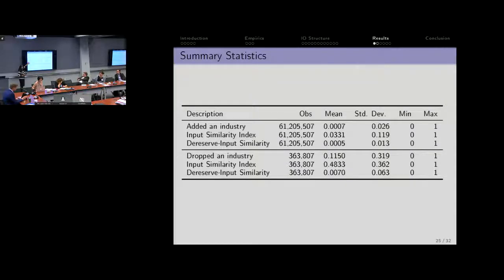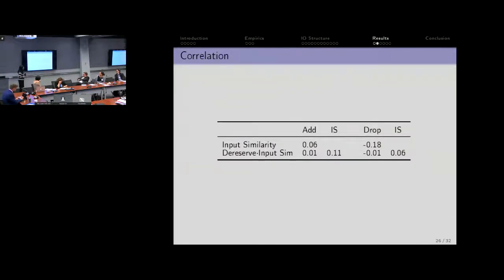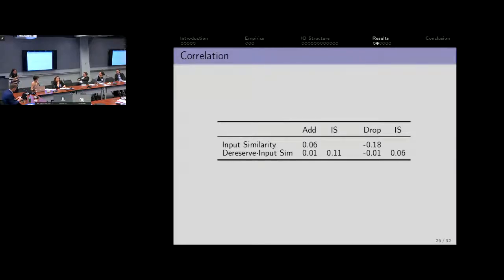We look for the input similarity index and the de-reserved input similarity measure. Thanks to Andy who pointed out the asymmetry — we now also have the drop results. The only issue with dropping is there's a big selection problem: you can only drop a product that you already make. Here are the broad correlations — it looks like we might be right. Broadly speaking, you do tend to add positively with a minor positive correlation, and minor correlation on the drop side. What I want to point out is that input similarity and the de-reserved input similarity don't seem to be highly correlated — there's fair variation due to policy timing.